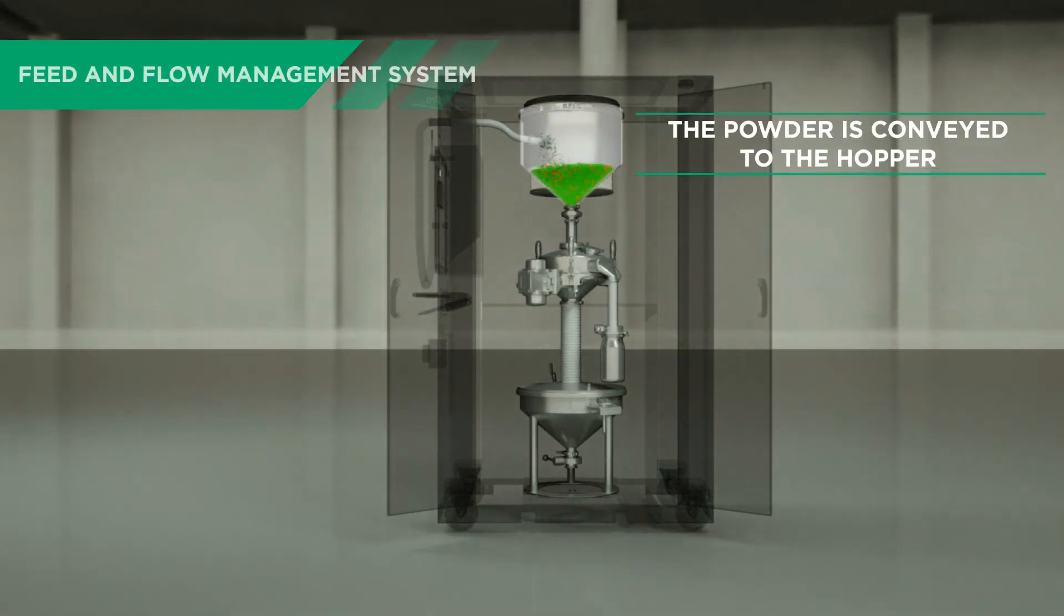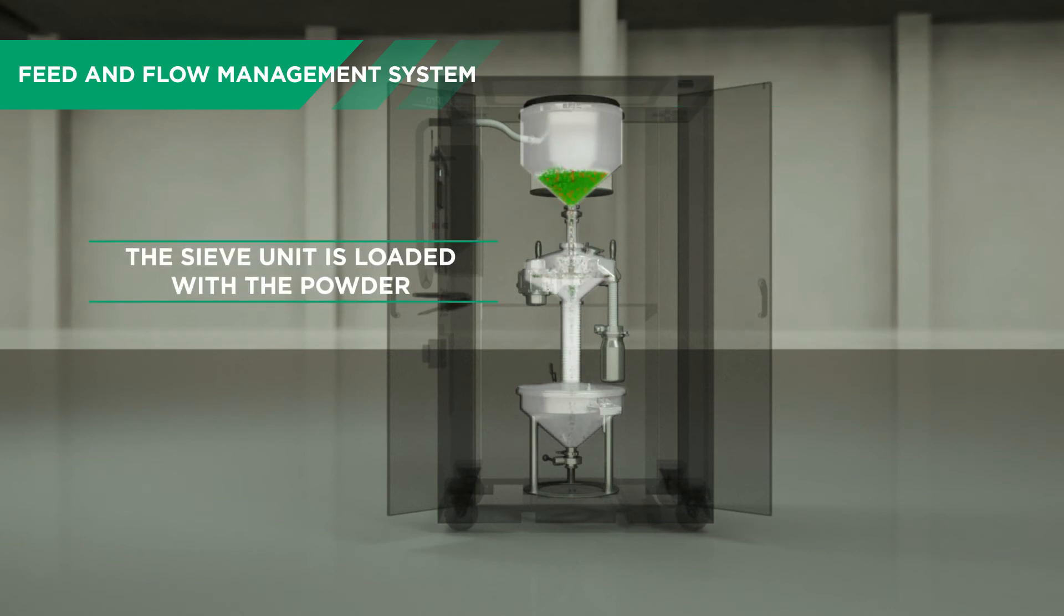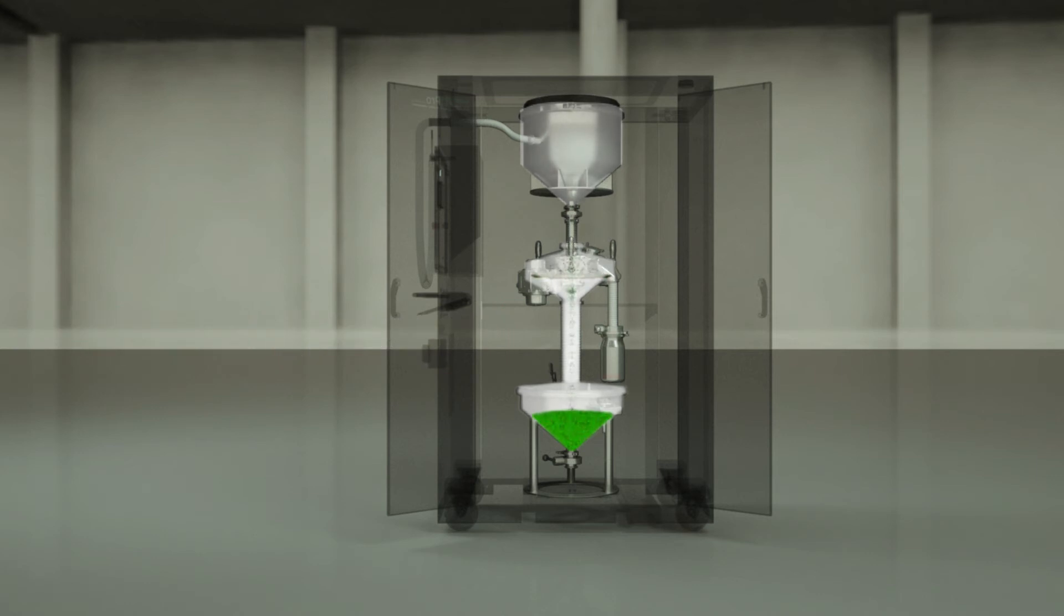The feed and flow management system controls and automates the flow of powder through the machine, optimizing the entire process without the need for constant monitoring, allowing operator time to be spent on other valuable tasks.